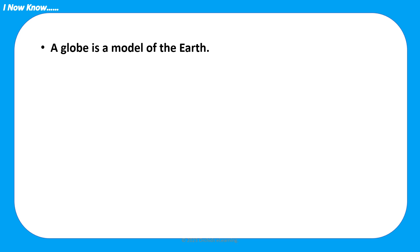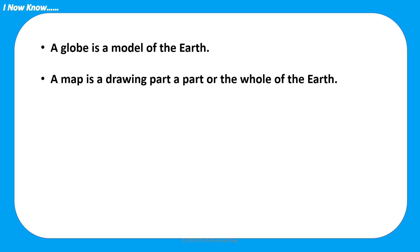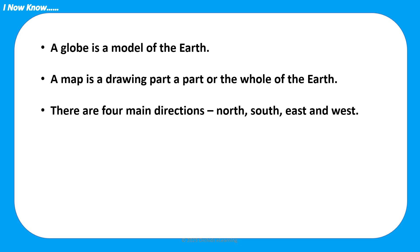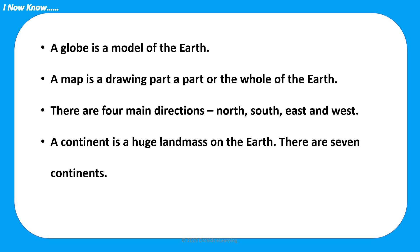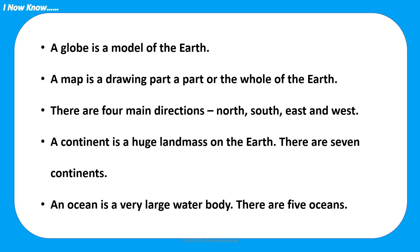Now I know: a globe is a model of the earth, and a map is a drawing of a part or the whole of the earth. There are four main directions: north, south, east, and west. A continent is a huge land mass on the earth - there are seven continents. An ocean is a very large water body - there are five oceans.